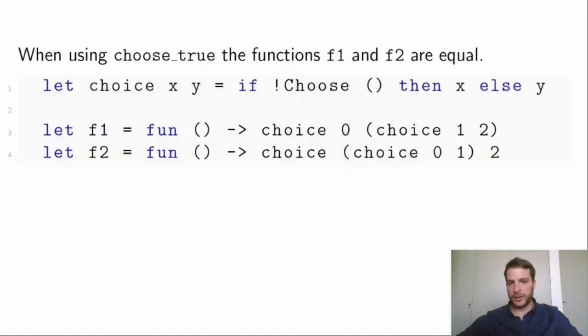And for a slightly more interesting example, if we build a function choice that returns one of its two arguments, where the selection is again done by choose, we can again use the handler that always returns true.